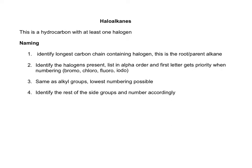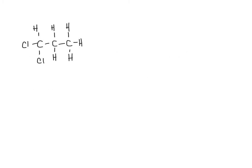Let's look at this example. We can see here that we've got two chlorines. So what we have to do first is identify the longest carbon chain that contains the halogens. So the longest carbon chain here is three, and these chlorines are attached to carbon number one.